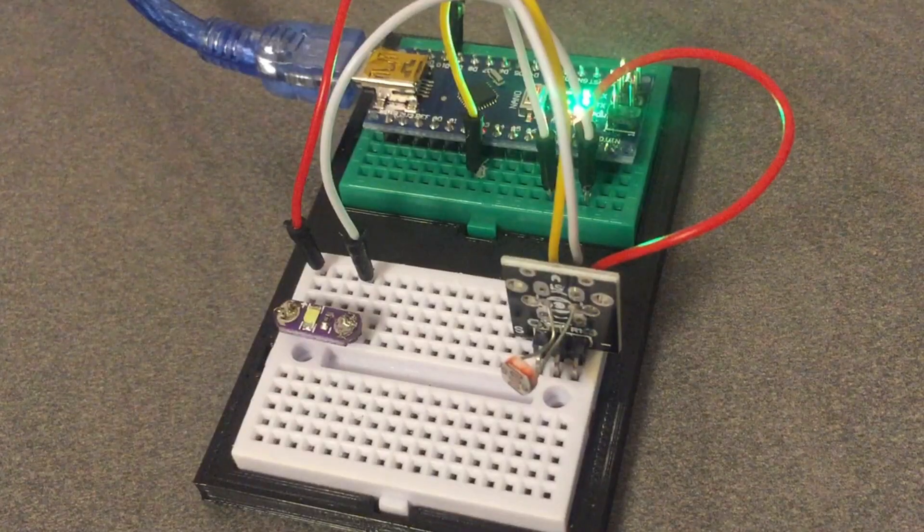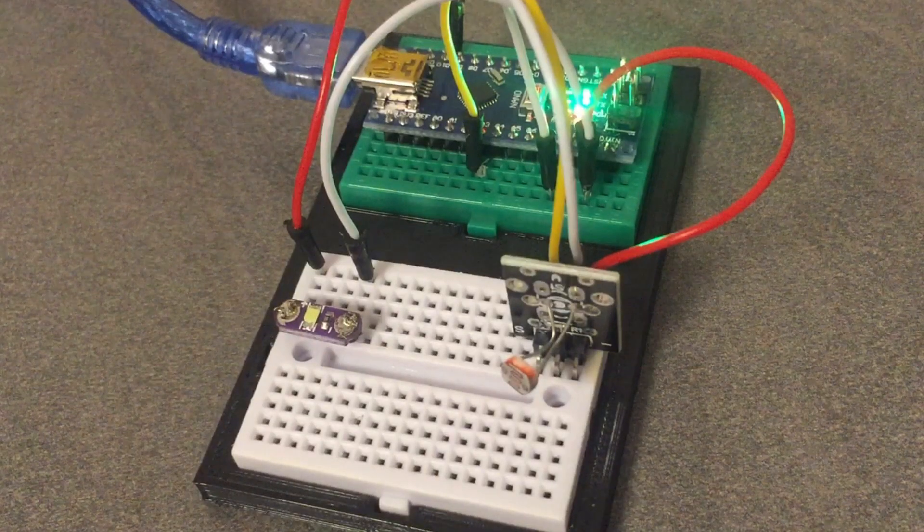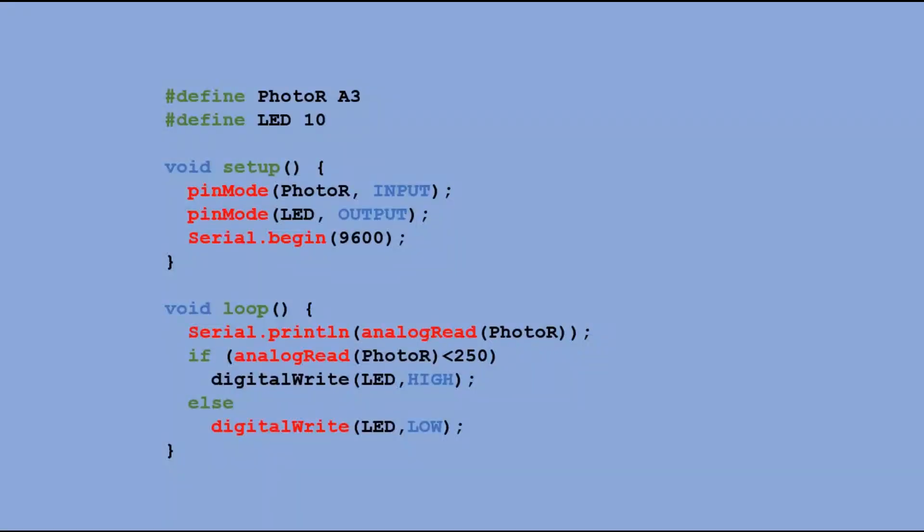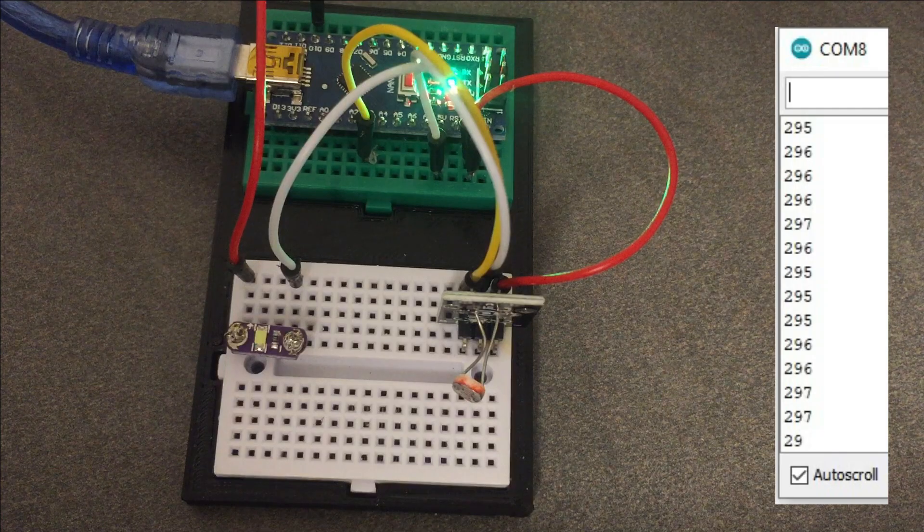So now let's revisit the circuit we built at the beginning of this video using the photoresistor sensor. We use the same code, changing just one line to adjust the threshold check, as this divider probably has different resistor values that would affect the reading on pin A3.